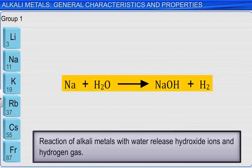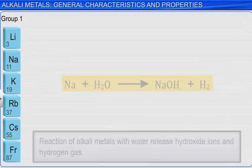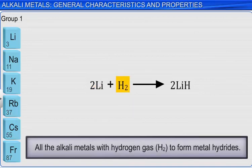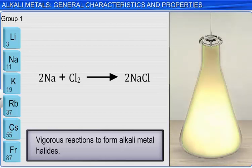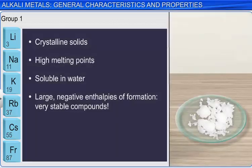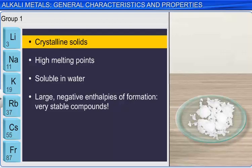The alkali metals all react with hydrogen. These reactions produce metal hydrides, which are ionic solids with high melting points. The alkali metals react very vigorously with the halogens. One classic example, shown in the photo, is the formation of table salt, or sodium chloride, from sodium metal and chlorine gas. The alkali metal halides are crystalline solids, as shown in the photograph. They have characteristically high melting points and are soluble in water. These are very stable compounds, as evidenced by their large negative enthalpies of formation.